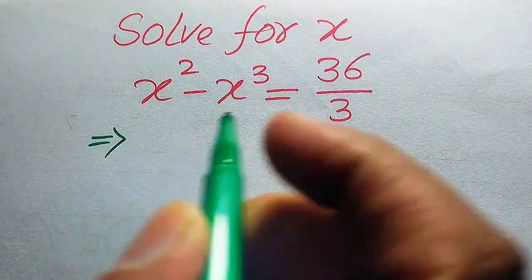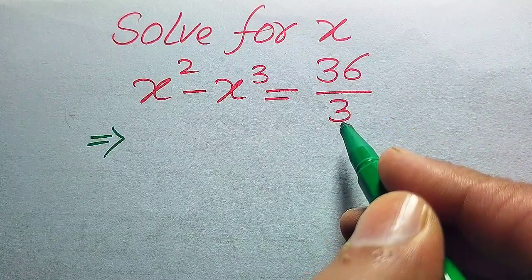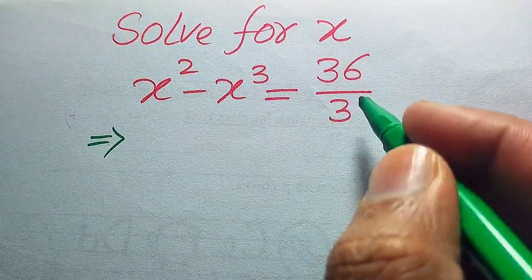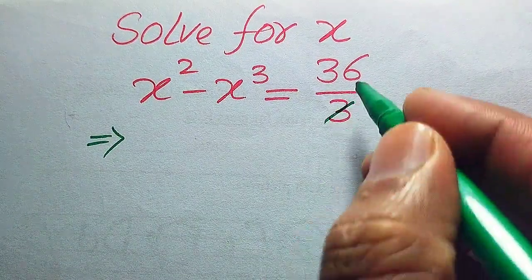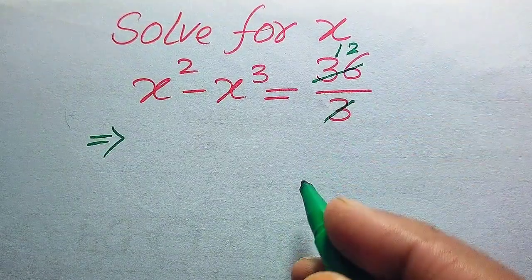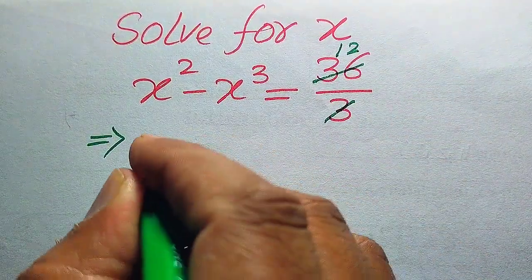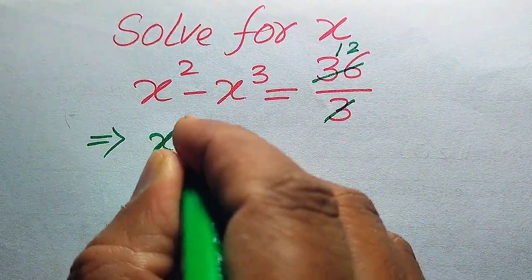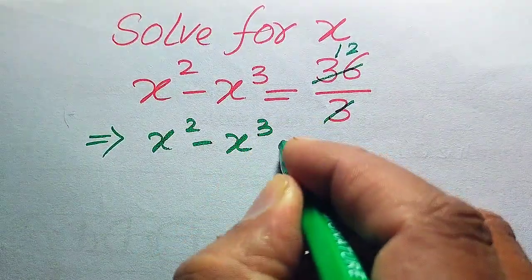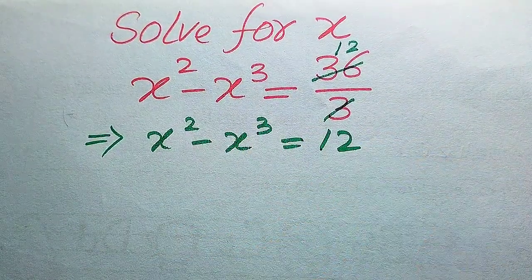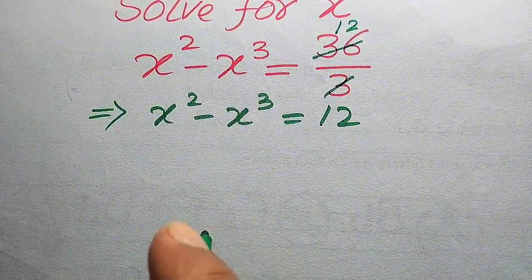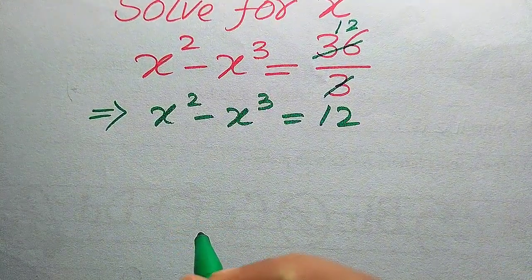Alright, let's get started. First, focus on the right-hand side. We have 36 divided by 3, and after cancellation — 3 goes into 36 twelve times — we get 12. So after simplification, our equation becomes X squared minus X cubed equals 12.